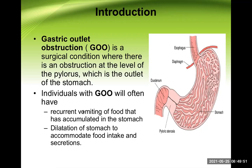Individuals with gastric outlet obstruction will often have recurrent vomiting of the food that has accumulated in the stomach, because food cannot pass distally — it will be collected in the stomach and then the patient will vomit it out. Along with the food, a lot of fluid can also be vomited out, so the patient has a high chance of dehydration and electrolyte imbalance.